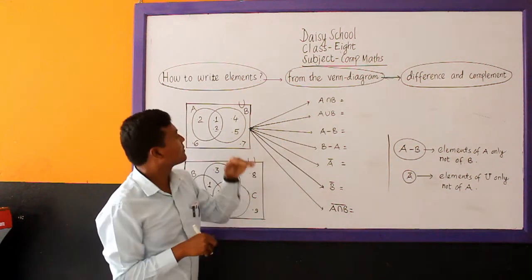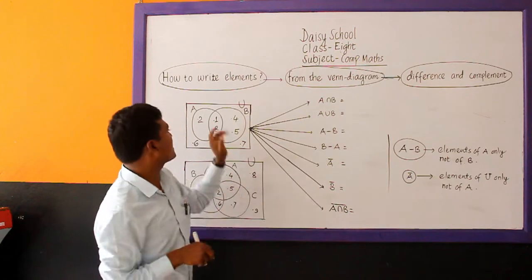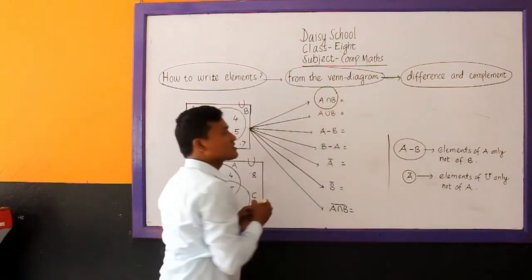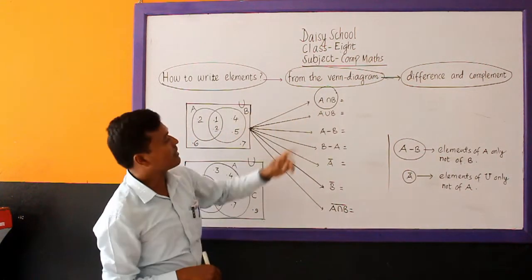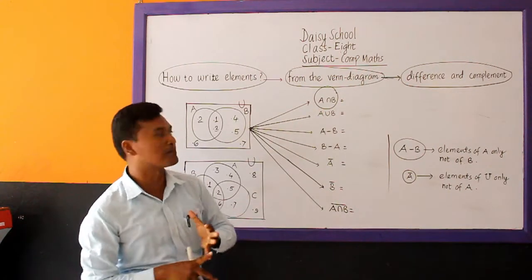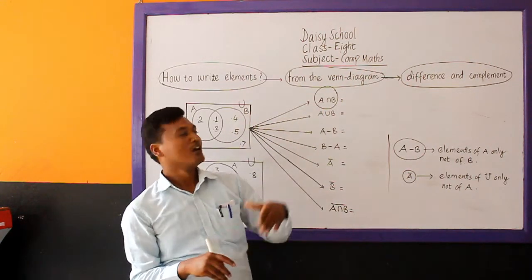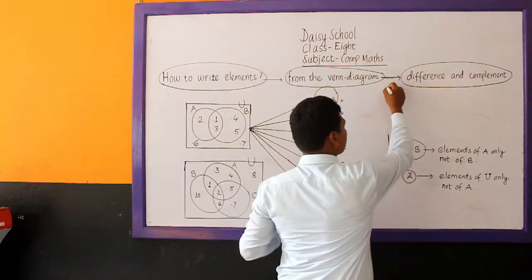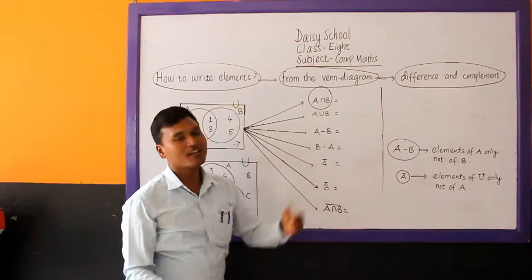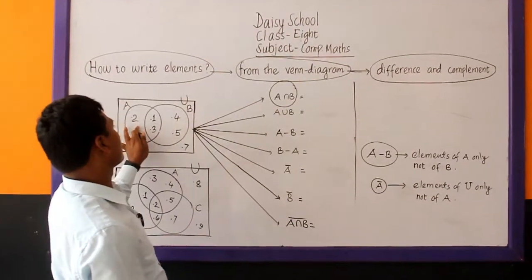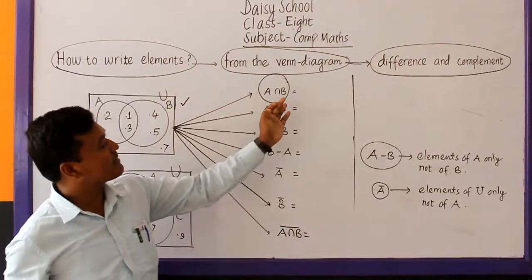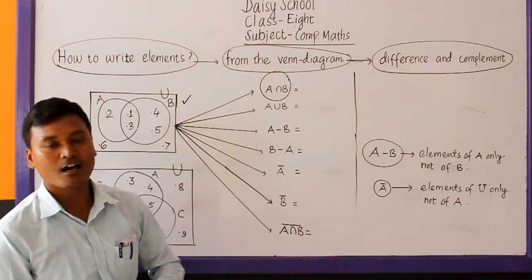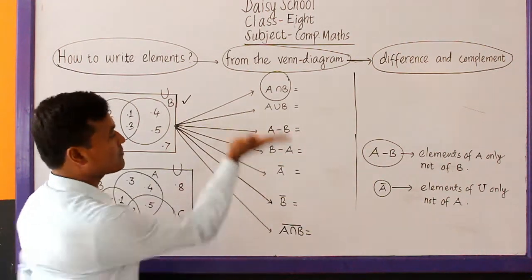First study the given Venn diagram by this way. Then you can start writing the elements of the given set operation. If we have to write the elements of A intersection B directly from the first Venn diagram, before I give you the direct idea — if you don't know the direct idea, we have a very simple idea. After some minutes, we shall read how to write the elements of A intersection B directly from the Venn diagram.